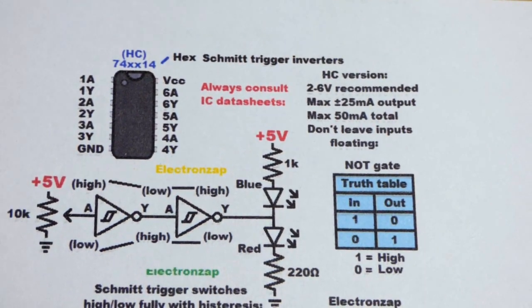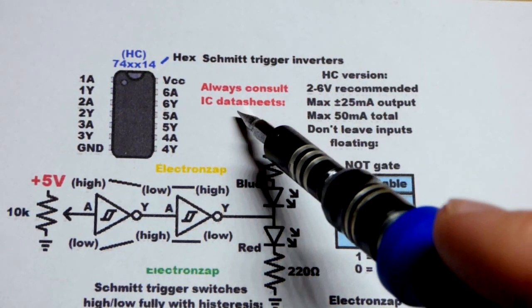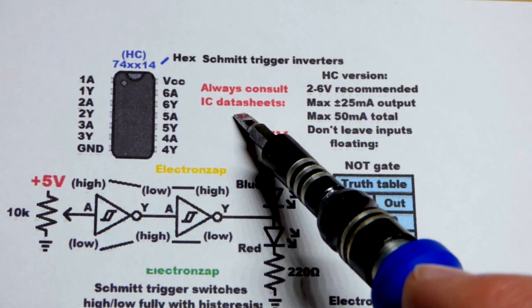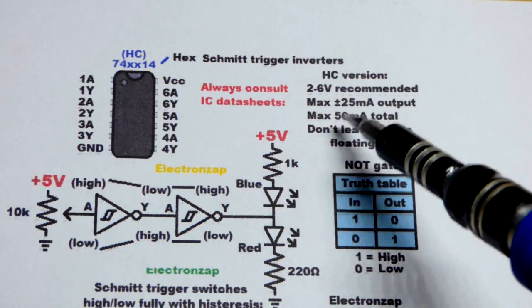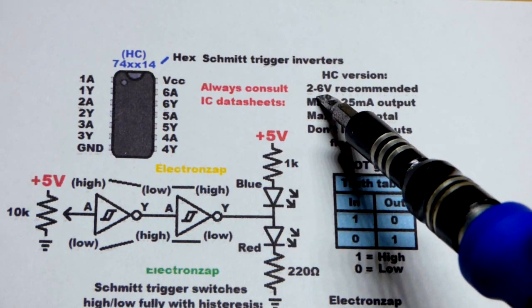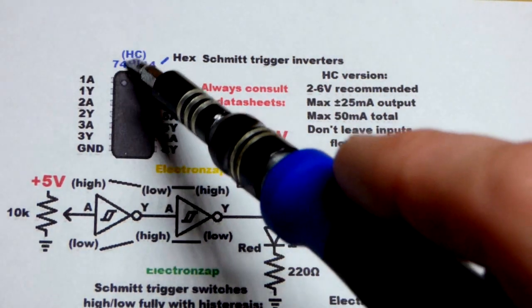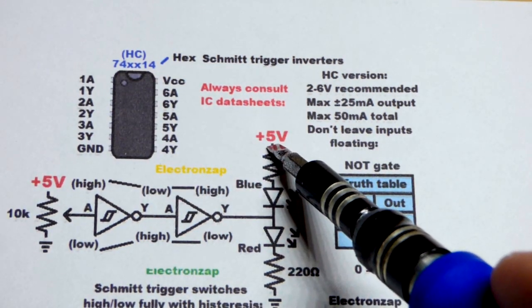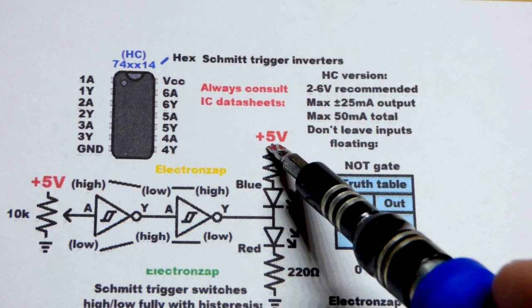The high speed CMOS version of this integrated circuit - always consult the data sheet though. Don't go by the numbers I'm giving you even. Check the data sheet and make sure. We can power this with 2 to 6 volts for the high speed CMOS version. These integrated circuits usually you're safe with 5 volts. I haven't come across one yet where 5 volts won't work.